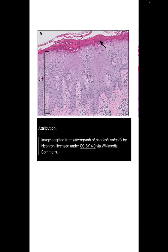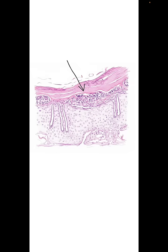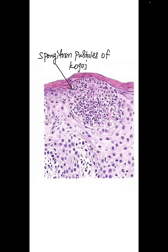You can also appreciate in this picture that there is lymphocytic infiltration in the upper dermis, which is also seen in psoriasis. This is how Munro's microabscesses would look — you can see aggregation of neutrophils in the stratum corneum. And this is how a spongiform pustule of Kogoj would look: in the stratum spinosum, again you see small aggregates of neutrophils, which is also a characteristic feature of psoriasis.